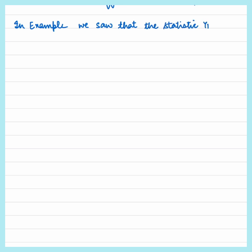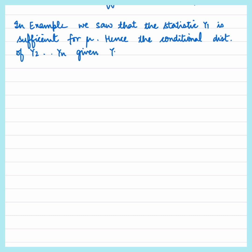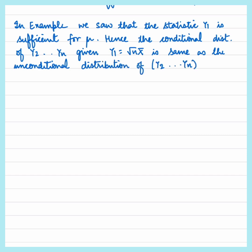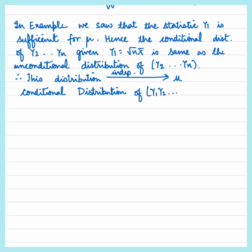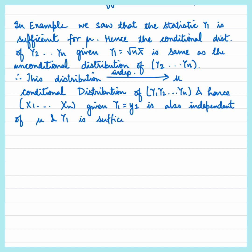In the previous example, y1 is sufficient for mu. By constructing y2, y3, ..., yn as i.i.d. Normal(0,1) variates independent of y1, the conditional distribution of y2, y3, ..., yn given y1 = sqrt(n)*x-bar is the same as their unconditional distribution. Since this distribution is independent of mu, the conditional distribution of x1, x2, ..., xn given y1 is also independent of mu. Hence y1 is sufficient.